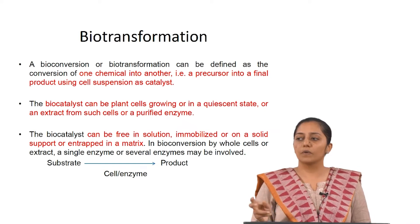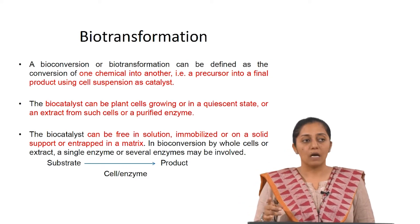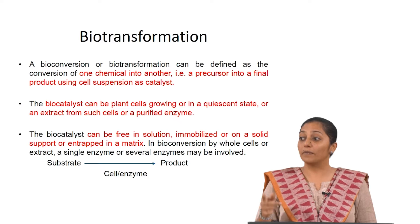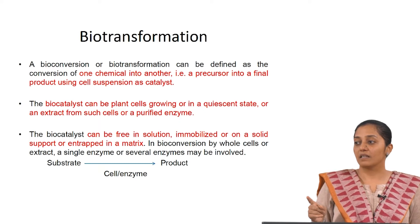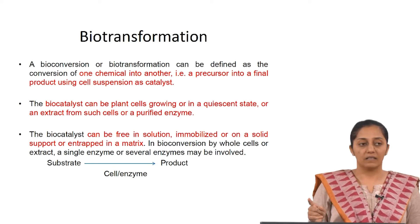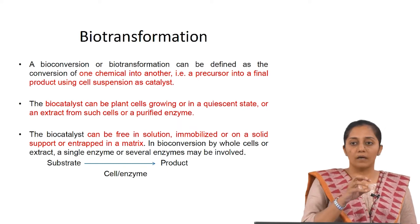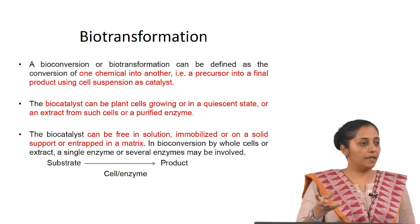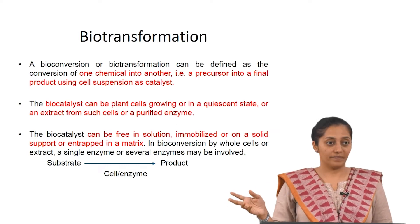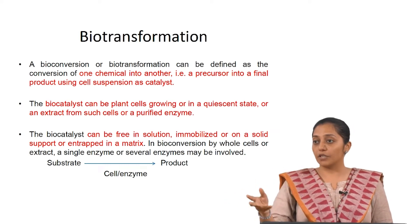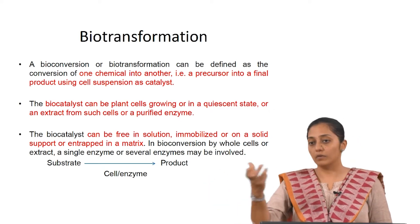What kind of conversions come under biotransformation? De novo synthesis means synthesis from scratch — from the beginning. In de novo synthesis, A gets converted to B, B to C, and these may not be structurally related. There can be multiple conversions with other intermediates combining together to give the final product moiety.